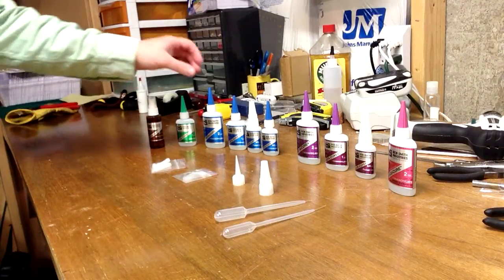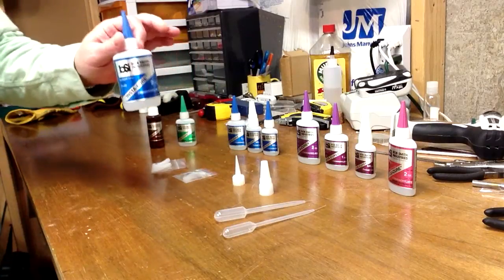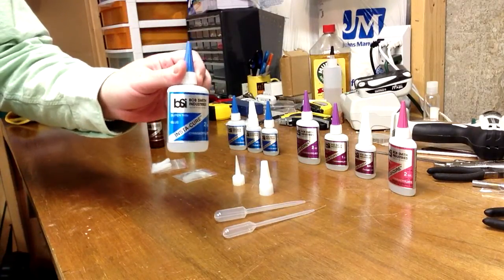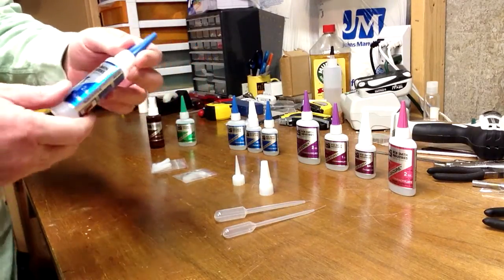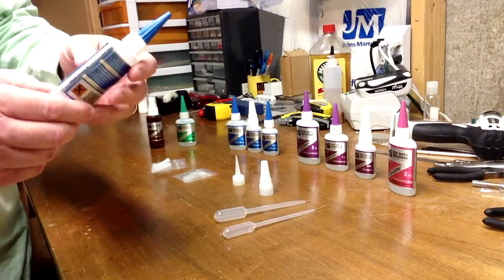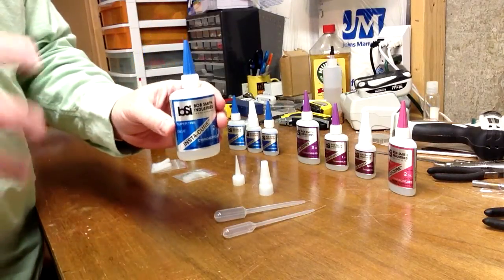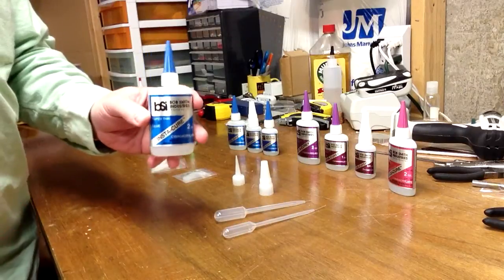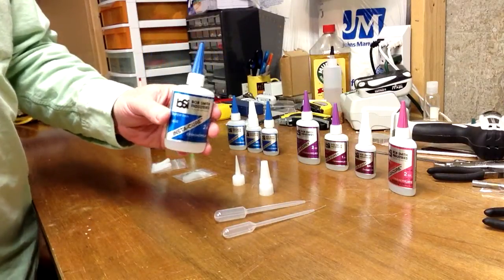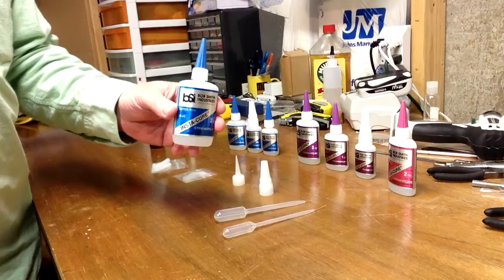We're going to start here first with the most common type, and this is the super thin version of the CA glue. It's almost the consistency of water, so it creeps into cracks and crevices and it's good for things such as fixing loose tuning pins.